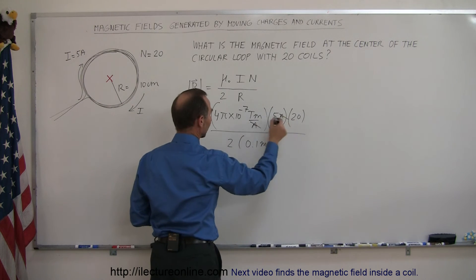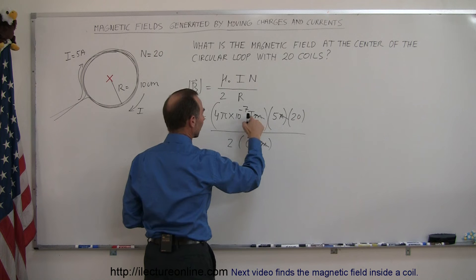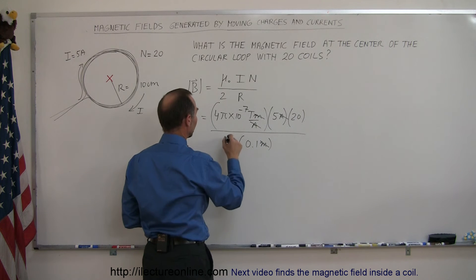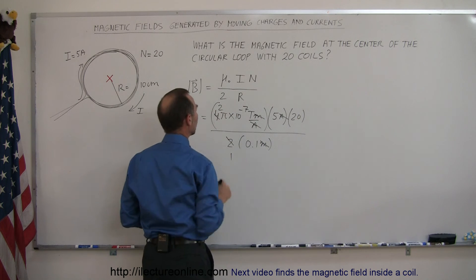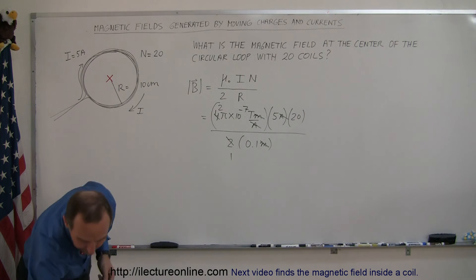Notice that the amps cancel out, the meters cancel out, you're left with teslas. This 2 will cancel out with that 4 and now we grab the calculator.